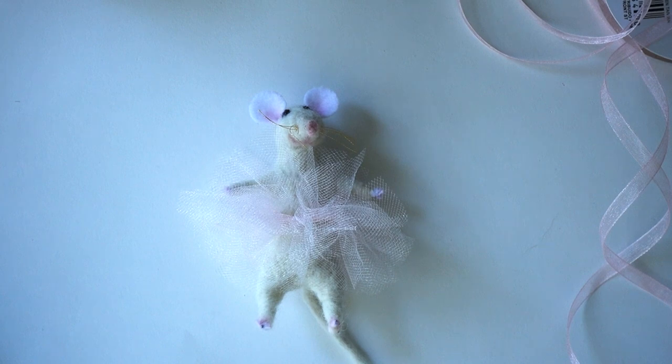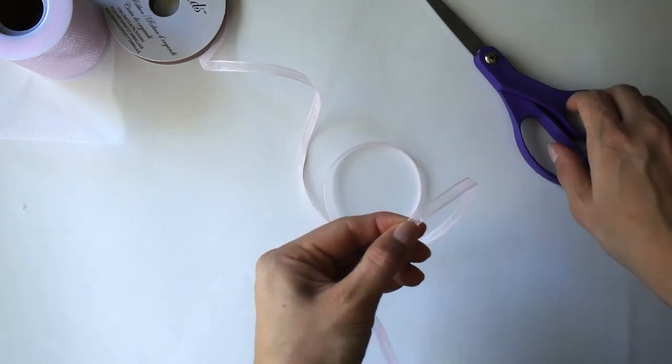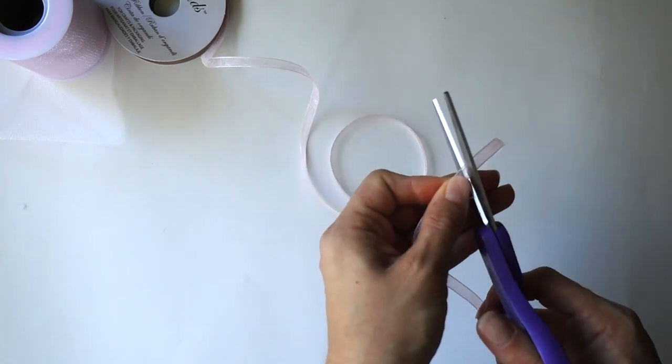To create the tutu skirt, you'll need a thin pink ribbon and a pink tulle. Cut enough of the thin ribbon so it can be easily tied around the body with a bow.